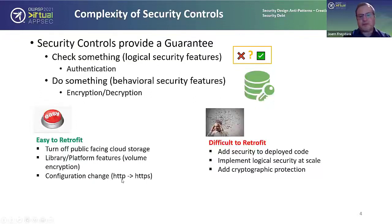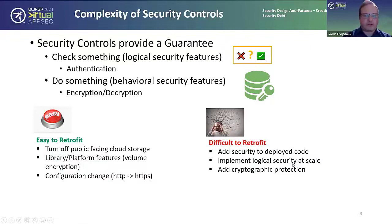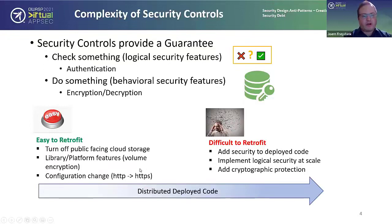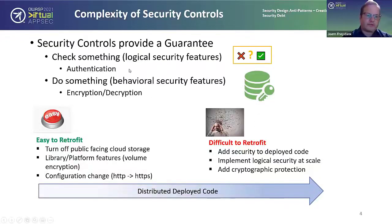More difficult things include adding security to already-deployed code — we always run the risk of breaking it. Implementing logical security at scale across distributed components is also hard. Adding cryptographic protection usually means touching more than one system at a time. There's another dimension: controls complexity goes up the more distributed deployed code you already have in place. Even easy security controls create a major headache if you need to apply them across a large code base.